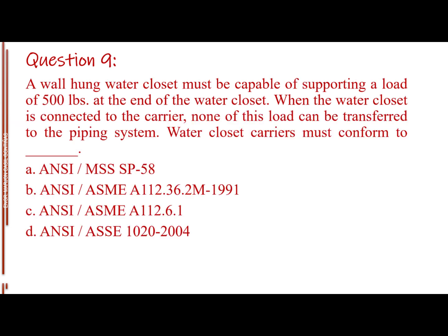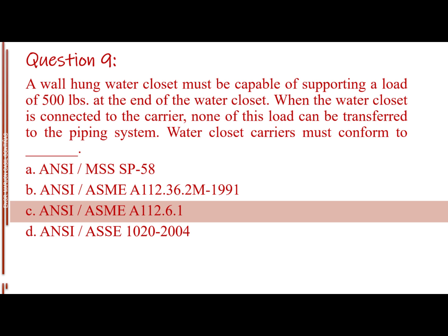Question number 9. A wall-hung water closet must be capable of supporting a load of 500 pounds at the end of the water closet. When the water closet is connected to the carrier, none of this load can be transferred to the piping system. Water closet carriers must conform to blank. Letter A, ANSI MSS SP 58. Letter B, ANSI ASME A112.36.2M 1991. Letter C, ANSI ASME A112.6.1. Letter D, ANSI ASSE 10-2004. The answer is Letter C, ANSI ASME A112.6.1.